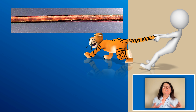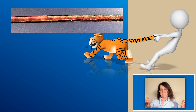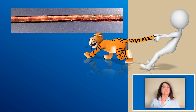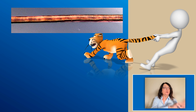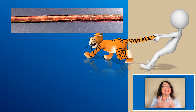A very typical abnormality in Trichothiodystrophy is the tiger tail abnormality of the hair shaft. However, in order to appreciate this, we need to pull the hair from the head of the patient, put the hair under a polarized light microscope, and then we can see the typical tiger tail structure.